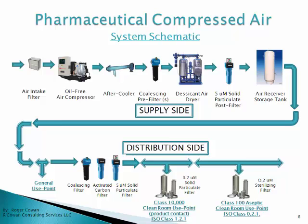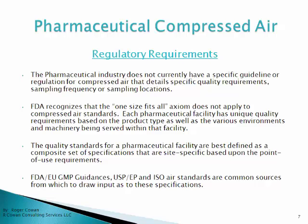Here is a schematic of a typical compressed air system. The upper half is the supply side and the bottom half is the distribution side, though this can be varied quite a bit. On the supply side, air comes in through an initial air intake filter from outside air, which is a heavy particulate filter, and then goes through the air compressor.